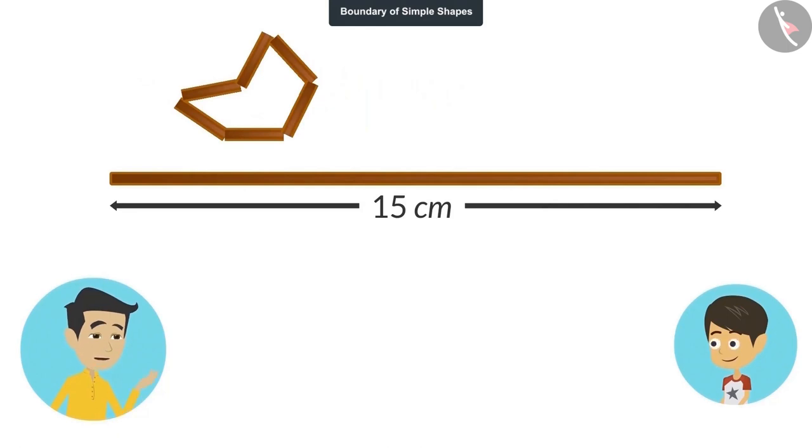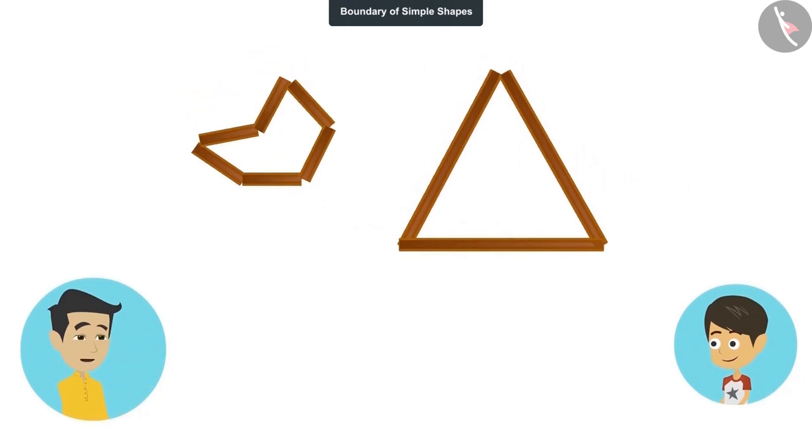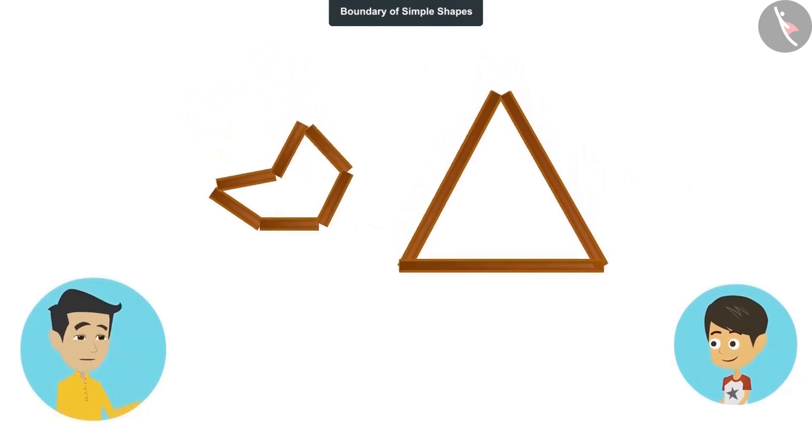And now cut the long stick into three pieces and make another shape. Now tell, which of these two boundaries is longer? The length of the boundary of this triangle shape is 15 centimeters, which is more than the length of the boundary of the shape with six edges. Absolutely right. That means the number of edges of a shape does not affect the length of its boundary.